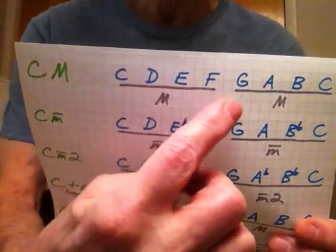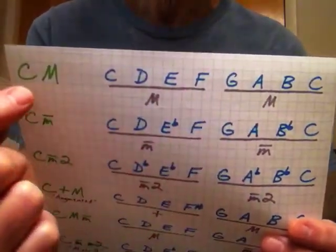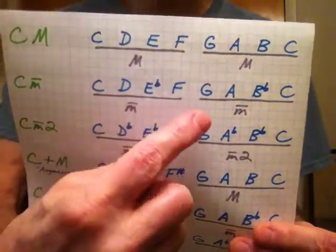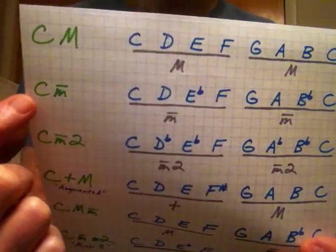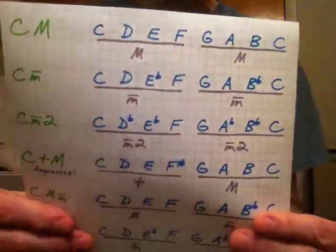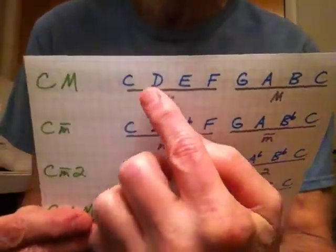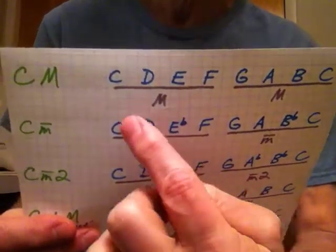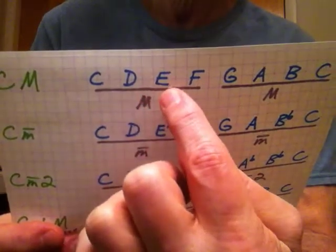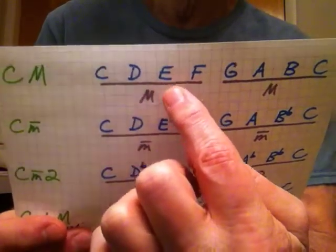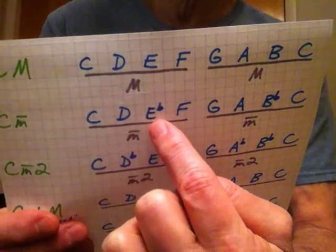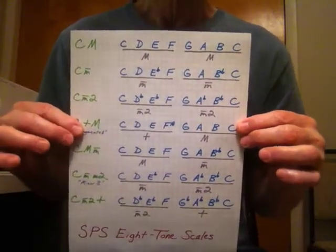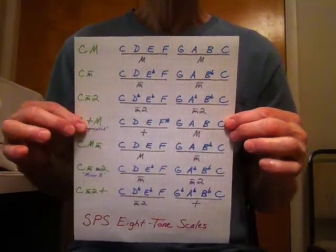Here you have two major scale phrases, and they make a C major scale. Here you have two minor scale phrases, and in this case they make a C minor scale. You see the difference in flavor and mood between the C major scale phrase and the C minor. From C, your tonic, to E, you have a major third interval, and here from C to E-flat, you have a minor third interval. So the flavor of the scale phrase is different, and consequently the flavor of the scale is different.